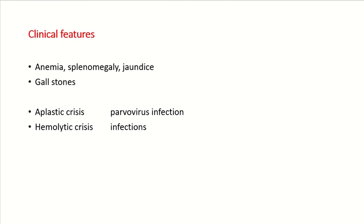The main clinical features of hereditary spherocytosis are anemia, jaundice, splenomegaly, and gallstones — all features of extravascular hemolysis. When there will be infection, these patients are prone to infection with parvovirus, which leads to aplastic crisis — meaning decreased production of RBCs in the bone marrow. These patients also present with hemolytic crisis, where certain infections lead to increased rate of destruction.